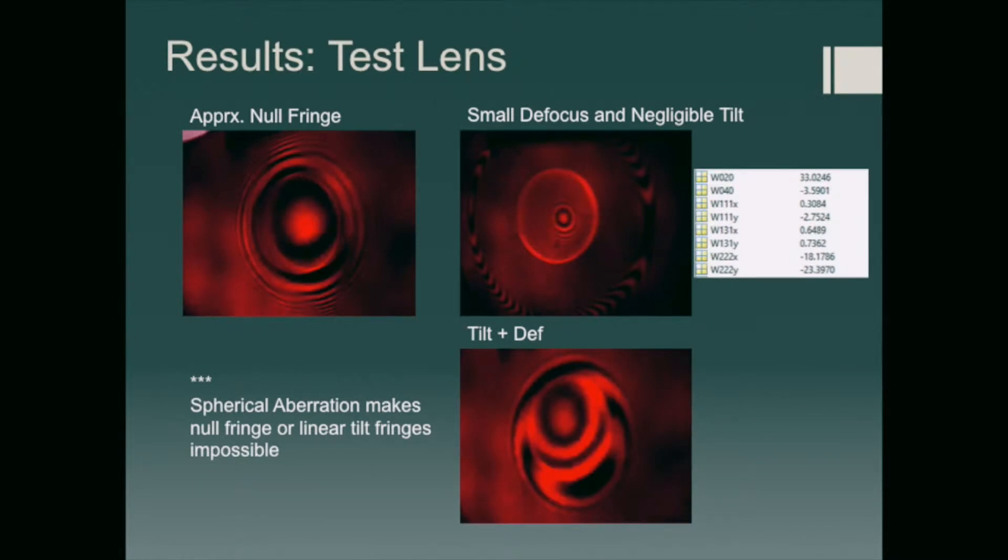Next you can see our results for the lens. The lens was much more difficult to work with, although we did get better fringe quality from it. So you can see our approximate null fringe, which is not exactly a null fringe because of spherical aberration. And then you can see our small defocus with a negligible tilt. We also calculated the coefficients of aberration for this using our analysis code. And you can see that there's a lot of defocus, a little bit of spherical, some tilts. And there is a lot of astigmatism, which must be because there was very few data points.